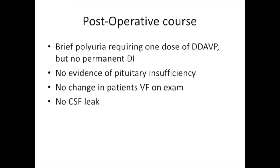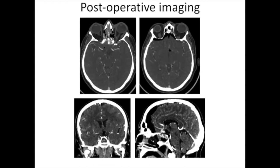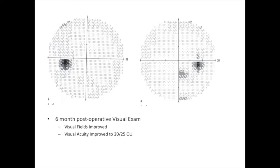Postoperatively, the patient only had brief polyuria but had no evidence of tubular insufficiency, including no diabetes insipidus. He had no change in visual fields on gross exam and no evidence of CSF leak. Postoperative CT scan immediately shows complete resection with preservation of the stalk and decompression of the floor of the third ventricle. At six months, postoperative visual field exam shows significant improvement in both visual fields and acuity. At one year postoperatively, he has been followed with no evidence of recurrence and maintenance of pituitary function.